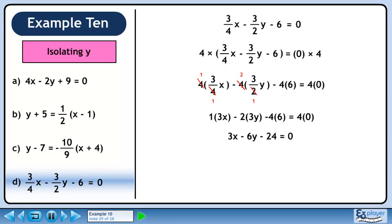This becomes 3x minus 6y minus 24 equals 0. Bring 3x minus 24 to the other side of the equation, changing the signs.